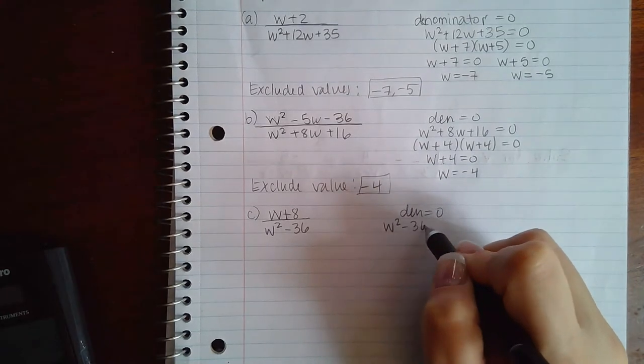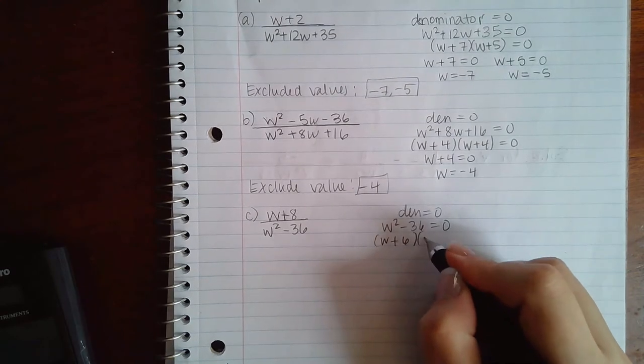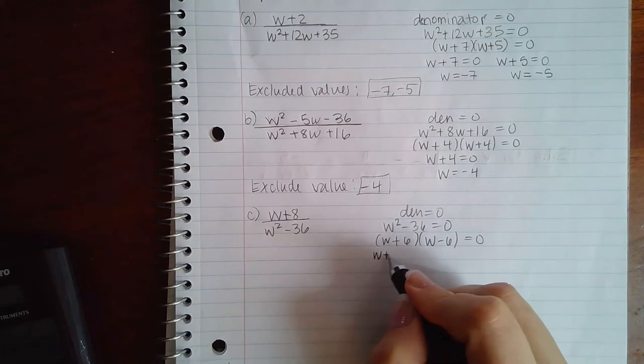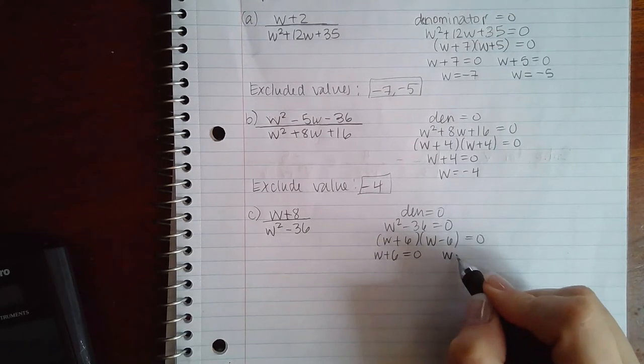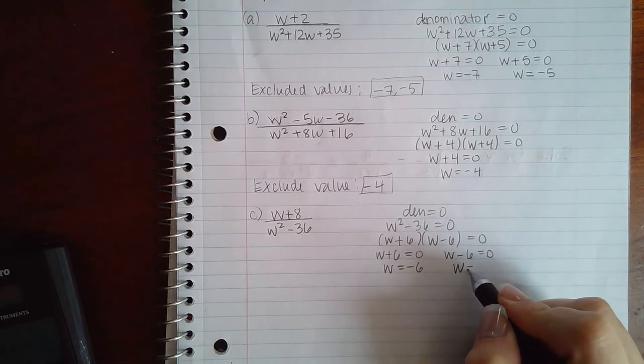Now here, same thing: denominator equal to zero. So W squared minus 36 equal to zero. I can factor that as W plus 6 and W minus 6. So if I set each factor equal to zero, I get W equal to negative 6 here and I get W equal to positive 6 there.